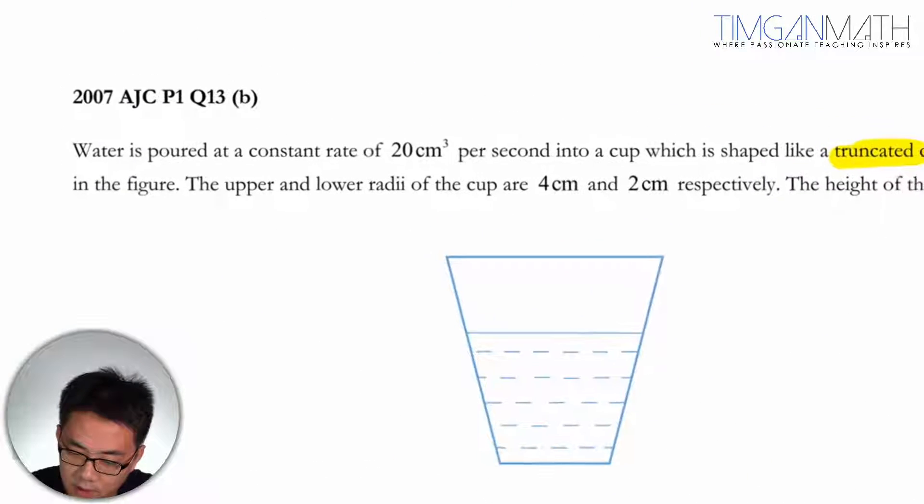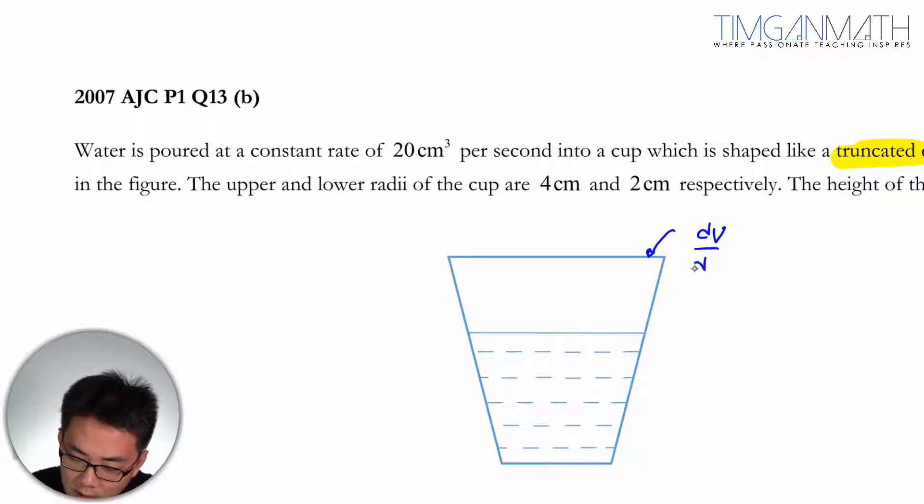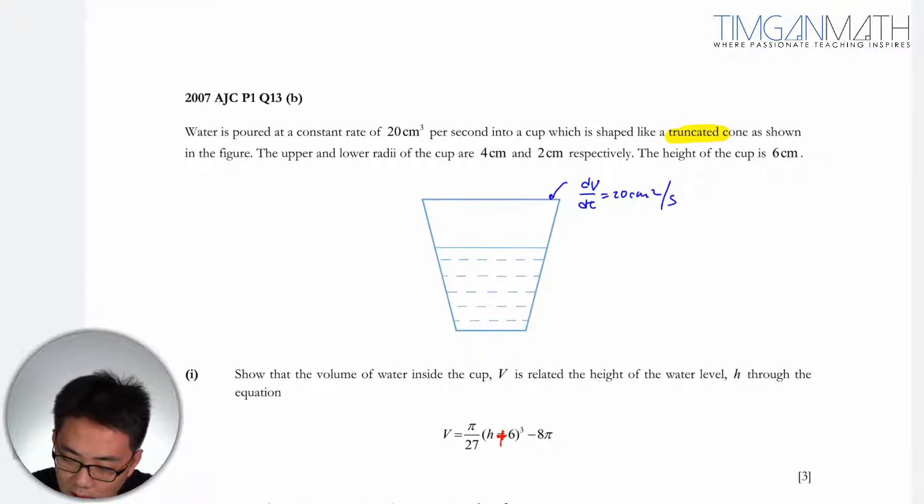So you're given that dV/dt is 20 cm³ per second. All these are in cm, so that's okay.